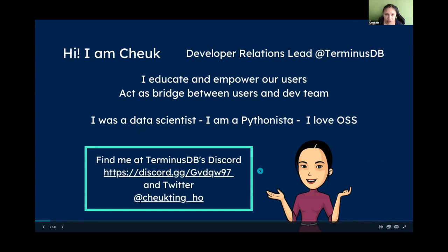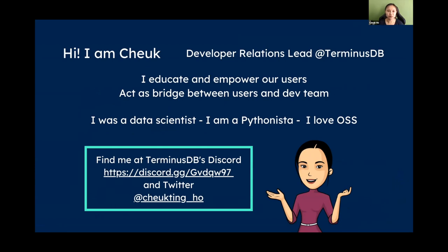I'm Chek, a developer relations leader at TerminusDB. TerminusDB is the open source graph database we will be using today — emphasis on open source. It's not something you have to pay for. As long as you have Docker, you can get the Docker image and have it running.